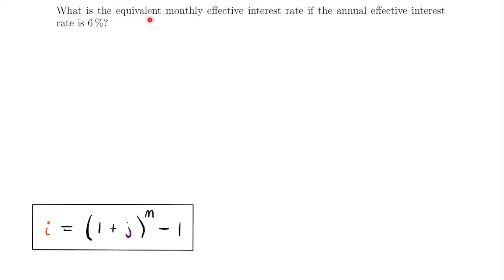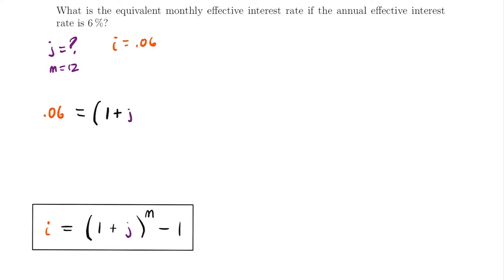For our first example, we want to know what is the equivalent monthly effective interest rate if the annual effective interest rate is 6%. We are looking for an equivalent monthly effective interest rate, which is a non-annual interest rate, so we are looking for J. We know the annual effective interest rate I = 0.06. Since J is going to be a monthly rate, M = 12 because there are 12 months in a year. Setting up our formula: 0.06 = (1 + J)^12 − 1.